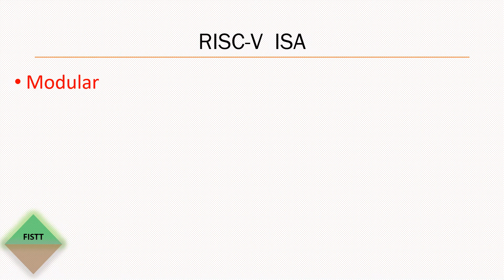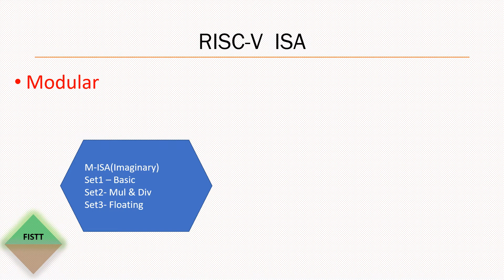In this session, I'm going to talk about the modularity of the RISC-V instruction set architecture. To explain what a modular ISA is, let's think of an imaginary processor M and its ISA called M-ISA. In M-ISA, instructions are grouped into sets, each for a specific function. Set one covers basic instructions like load, store, arithmetic, and execution control — such as conditional and unconditional jumps — while set two covers multiplication and division instructions.